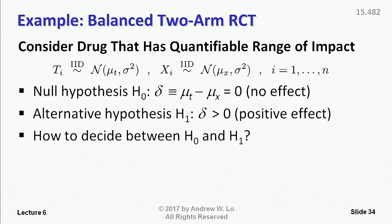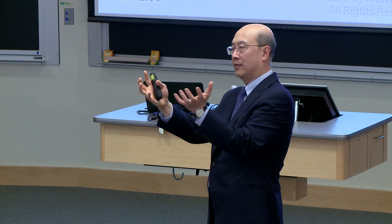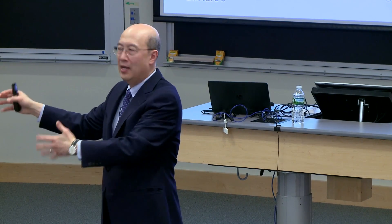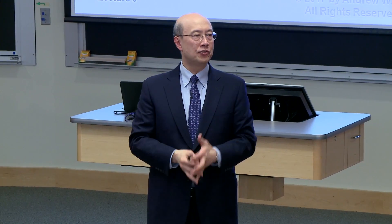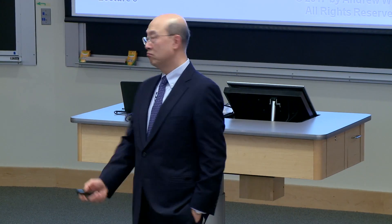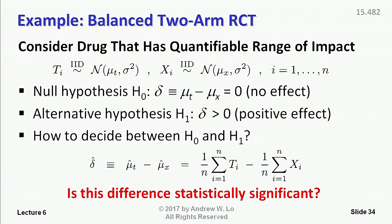How do we decide between H0 and H1? Most of you have had hypothesis testing, so you know the drill: you construct the confidence interval and then calculate your estimate of delta. If that estimate is inside the confidence interval around zero, then there's no effect. But if it's outside the confidence interval, then you reject the null hypothesis and conclude the drug is effective. We take on that challenge by constructing a simple mean — we calculate the effects across all people in the treatment and control groups, average them, and take the difference. If the difference of the averages is greater than zero statistically, we have a new drug; if it doesn't, then we don't.